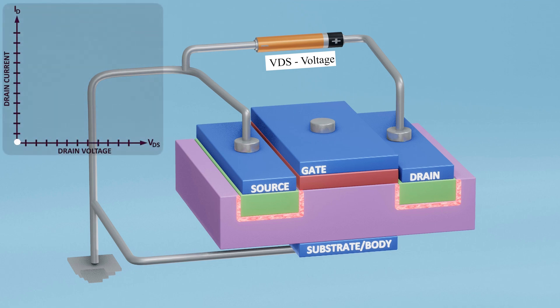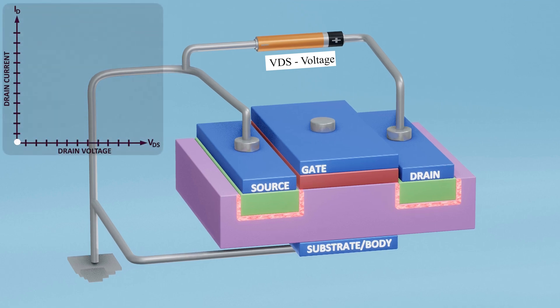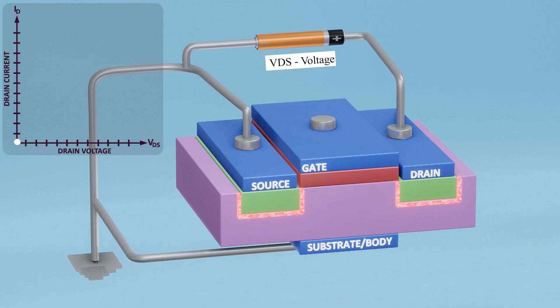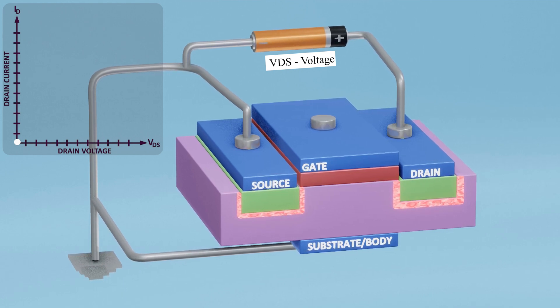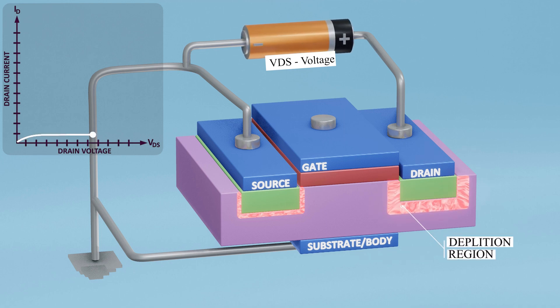When we observe the graph of the drain current versus VDS, we can see that the positive end of the battery increases the potential at the drain terminal, leading to an expansion of the depletion region between the drain and the substrate.